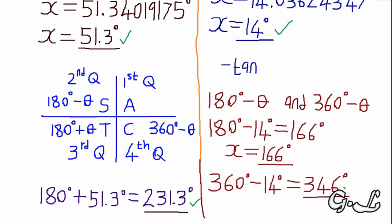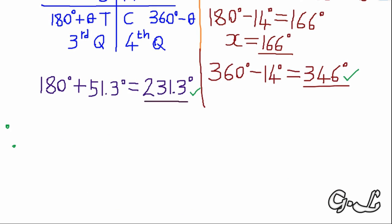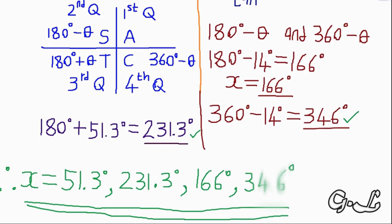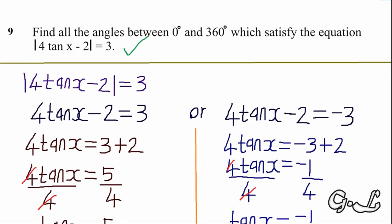These are our answers. In the exam room you write: therefore x equals 51.3 degrees, 231.3 degrees, 166 degrees, and 346 degrees. I hope you are clear. Don't forget to subscribe, like, share, and comment on this YouTube channel. See you in another video tutorial. Thank you for watching.